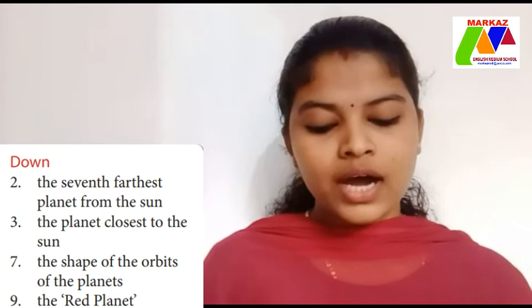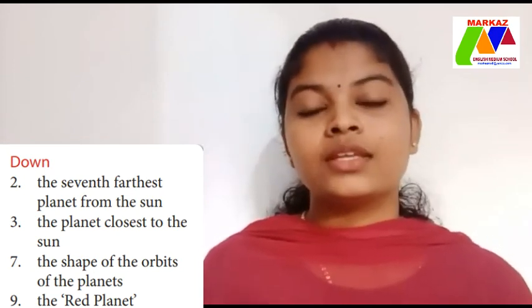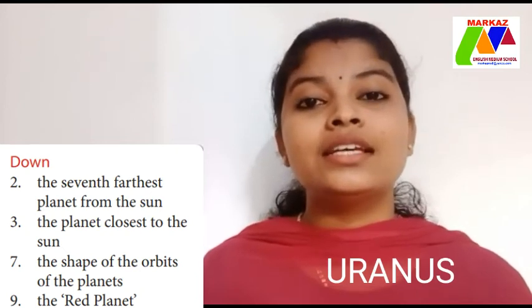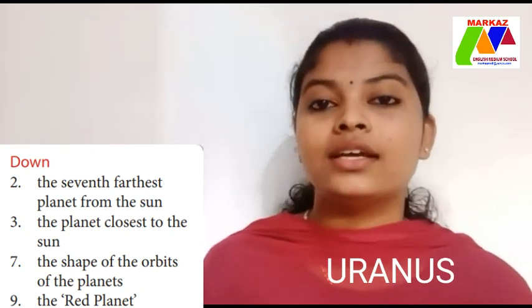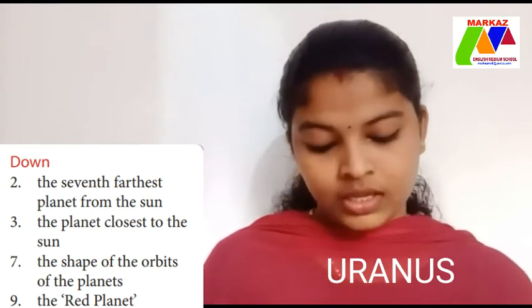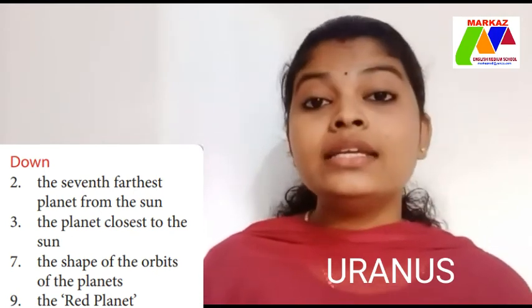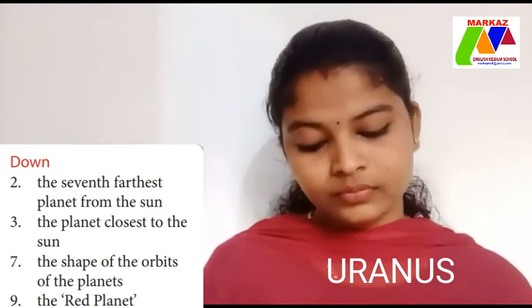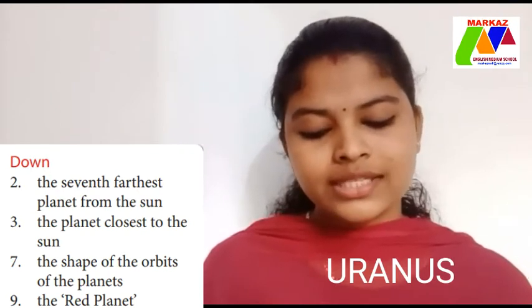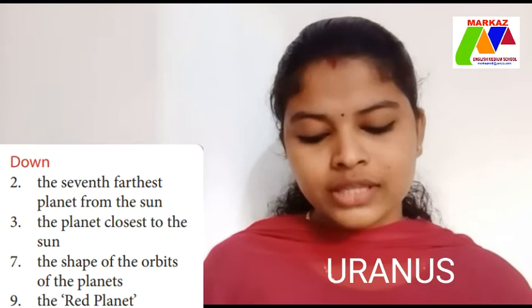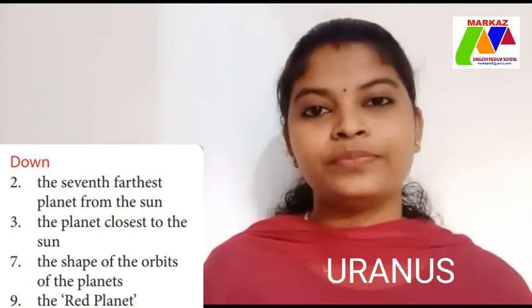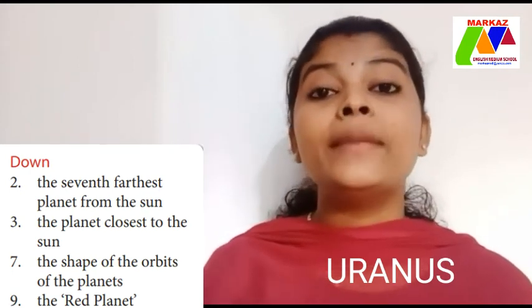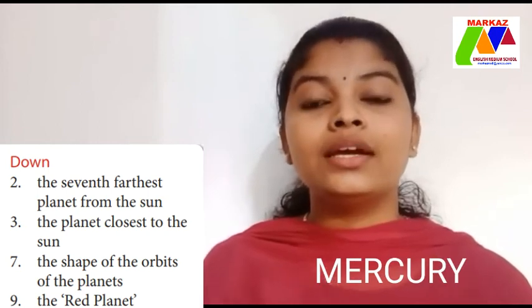Now down clues. The seventh planet from the sun — the answer is Uranus. Next, down three: the planet closest to the sun — the answer is Mercury.